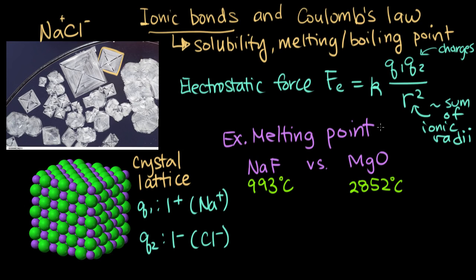Since melting point is a measure of basically how much energy do you need to add to these compounds to break apart your ions, we would expect melting point to go up, to increase as Fe increases. As the force between the ions increases, we would expect to have to add more energy to break those ions apart. And we can see that in our first example.